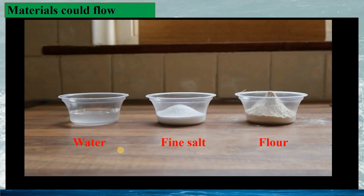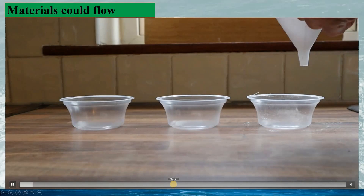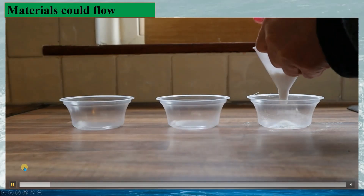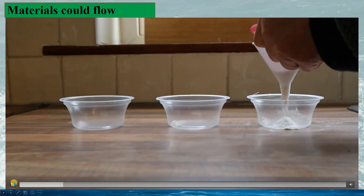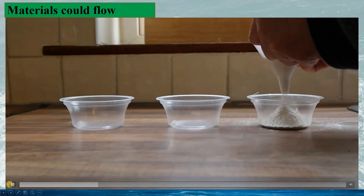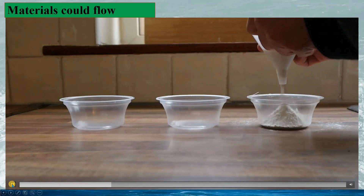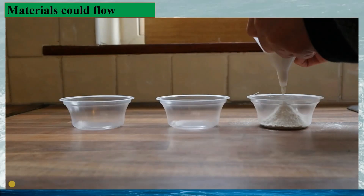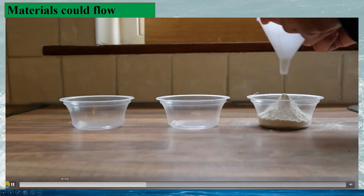Let's see an experiment of flows of different materials. Here we have three different materials: flour, fine salt, and water. The volume of each material is the same, 60 millilitres. The first experiment is the flow of the flour. We can see the flour flows through the funnel, but not very smoothly — we have to shake the funnel to make the flour flow. The flour density is 0.593 kg per litre. The flour flow results in a sharp cone in the cup.